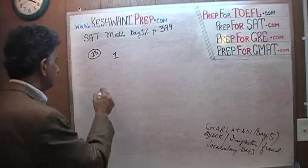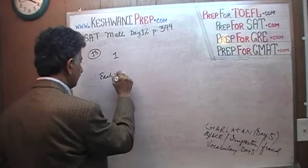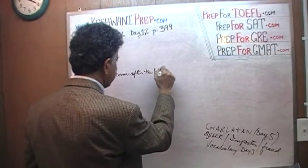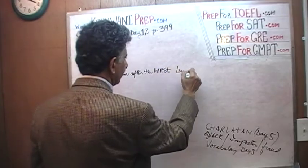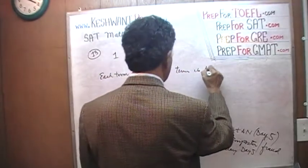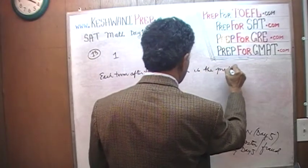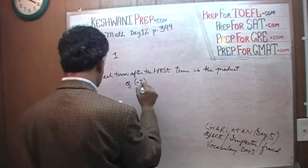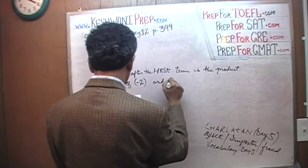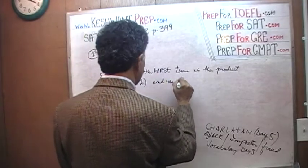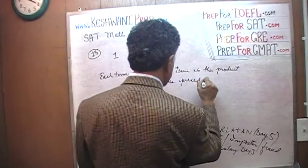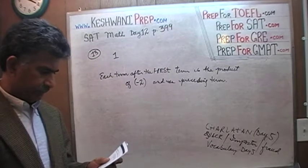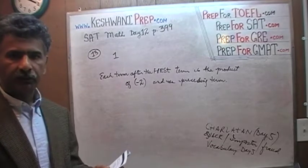Each term after the first term. Obviously because they are giving you the first term. The second term is the product of negative 2 and the preceding term. The preceding term means the term that comes before it. The question simply is what is the sixth term? Well that is pretty straightforward.